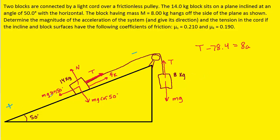And so, in this case, we have the mg sine 50 force, which is positive because it's pointing down the ramp, minus the tension force minus the frictional force is equal to the mass times the acceleration.